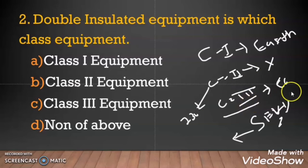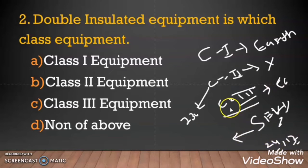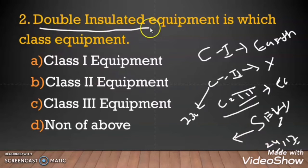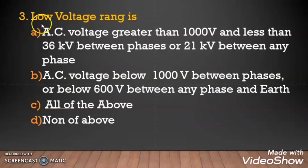Class 3 equipment works on a separated extra low voltage system, with voltage magnitude as low as 24 volt or 12 volt. At this voltage you will not get any electricity shock, so this equipment also does not require earthing. The difference is that Class 3 has very low operating voltage, while Class 2 operates at normal low voltage but with double insulation. So as I told you, the answer is Class 2 equipment.